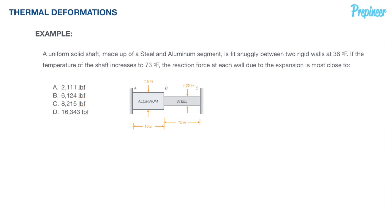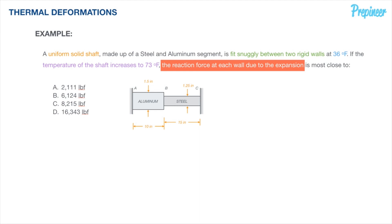We're dealing with a constrained expansion — because it can't freely expand due to the temperature change, there are going to be reaction forces at the wall and stresses created within these two segments. We have a uniform solid shaft made up of steel and aluminum, fit snugly between two rigid walls at an initial temperature of 36°F. If that temperature increases to 73°F, we need to determine the reaction force at the wall.